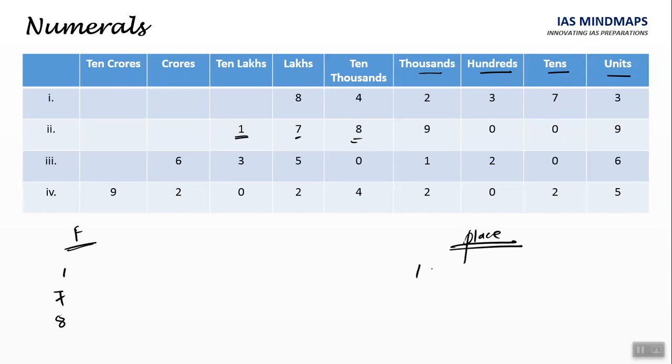This 1 into 10 lakh equal to 10 lakh. So place value of this 1 is 10 lakh. For 7, it's 7 into 1 lakh. Hence place value of 7 is 7 lakh.